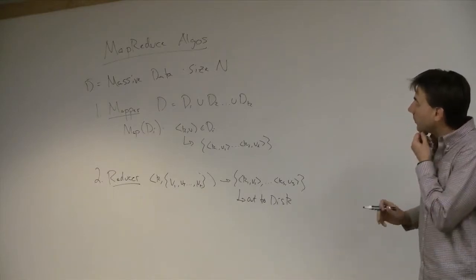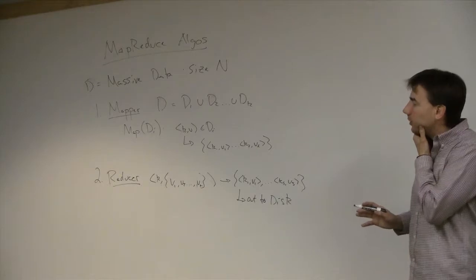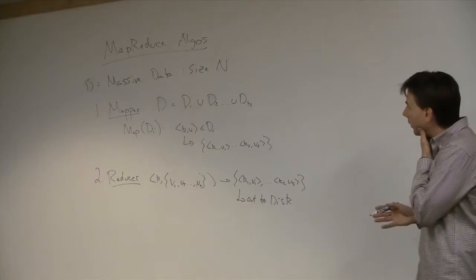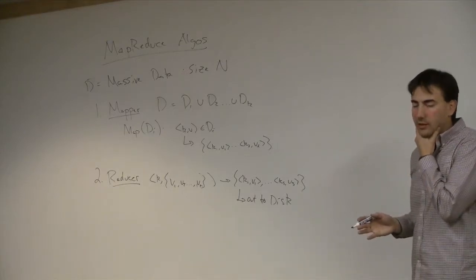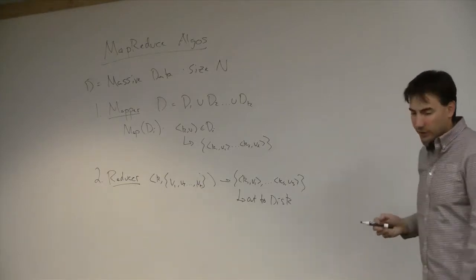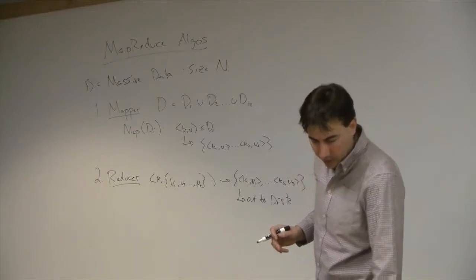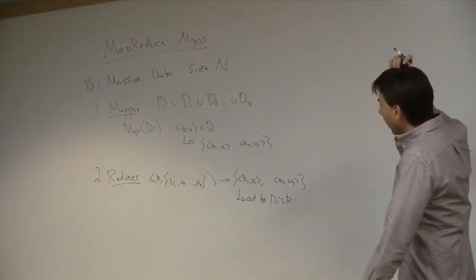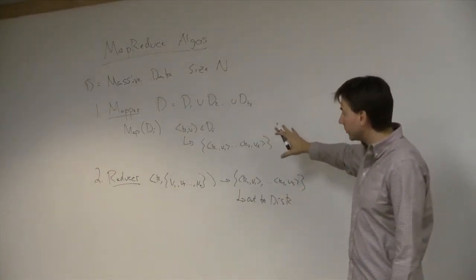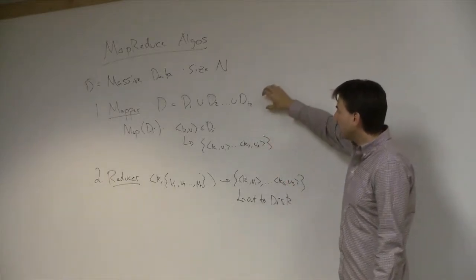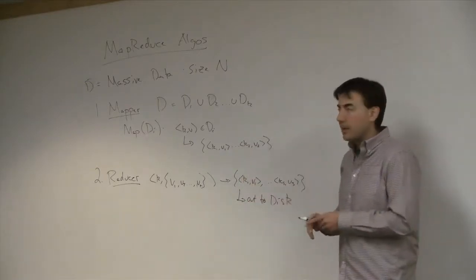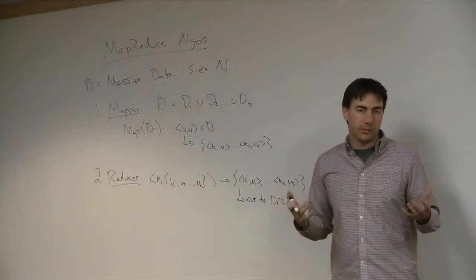The goal of MapReduce is usually to do a constant number of rounds and get results written to disk. It's most effective when both input and output are very large and need to be parallelized. If you just want a small result in memory, you may want to use something else. MapReduce came out of Google around 2003-2004 and took off in the late 2000s. Today we'll try and relate this model to more well-known models for parallel algorithms.